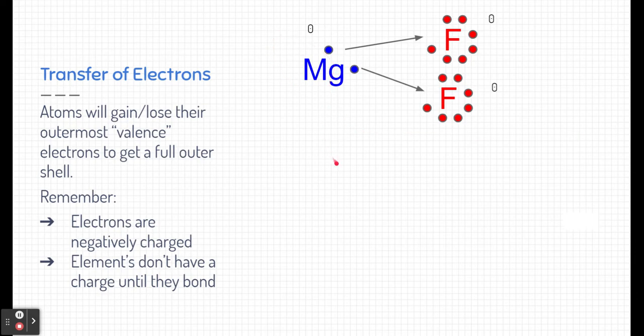When magnesium does that, it is losing negative charge. It has lost two electrons. By losing two negatively charged particles, magnesium then becomes positively charged, specifically positive two because it lost two electrons.